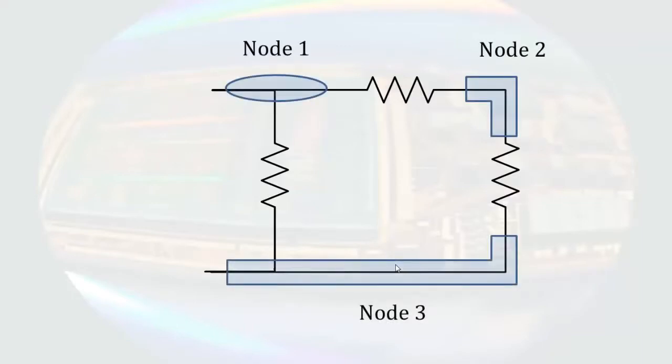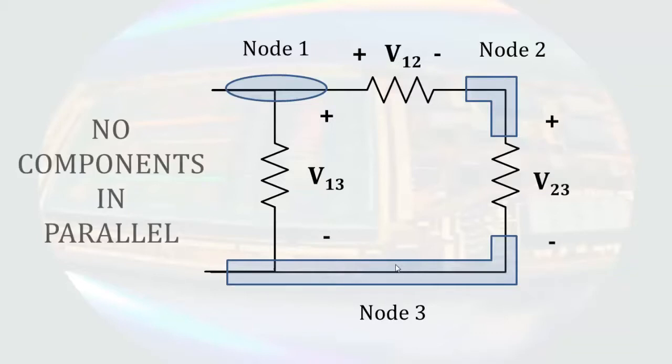If there are three nodes, we have voltages between all three of them, so we have three separate voltages in this circuit. Therefore, in this circuit there are no individual components in parallel.